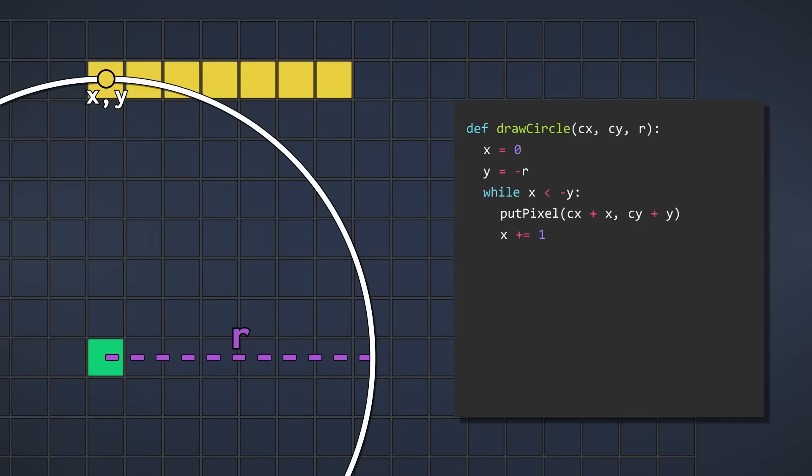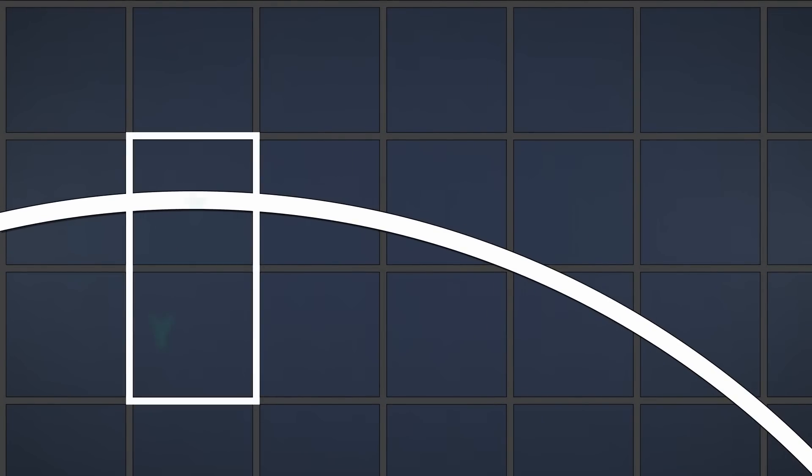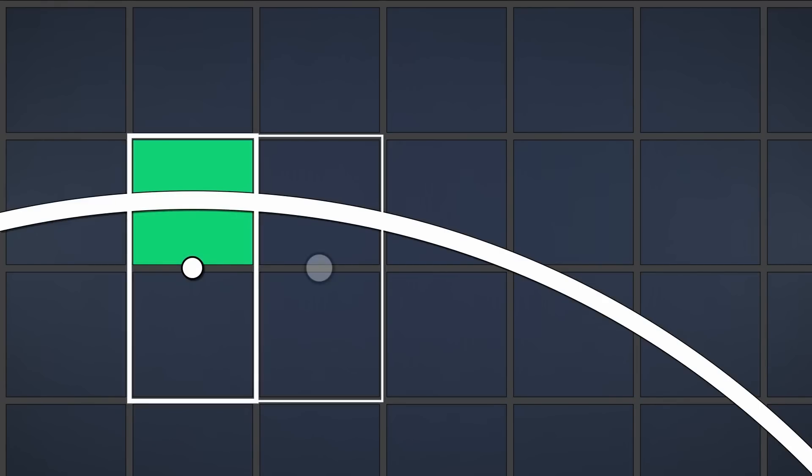To curve this line along our circle, we need to decide at each iteration whether we should increment Y by one. Highlighted here are the two possible pixels at Y and Y plus one. For this algorithm, we take the point directly between both pixels. We call this the midpoint, which is where the algorithm gets its name. If the midpoint is inside of the circle, we stay on the same pixel. And if the midpoint is outside of the circle, we increment Y by one. Here we can see that the midpoint is inside of the circle, which means that we do not increment Y and simply place our pixel here.